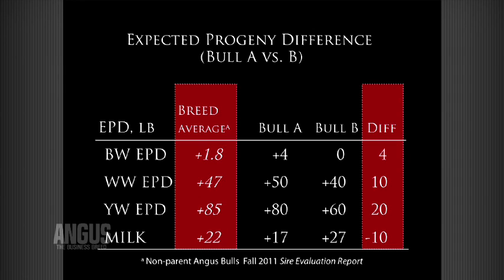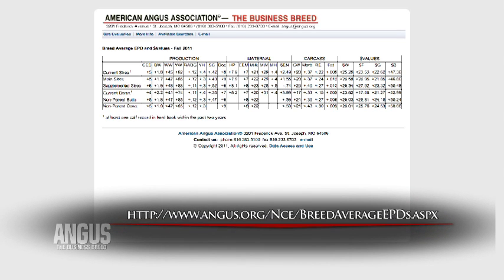If we summarize the growth traits for this particular example and compare Bull A and Bull B for birth, weaning, and yearling, you can see the advantage for lighter calves at birth was for Bull B with an EPD of zero. In contrast, Bull A excelled in weaning weight and yearling weight with an advantage of 10 and 20 pounds, respectively. Another comparison you can do is see how those bulls compare to the non-parent breed average — you can access those tables on the web.